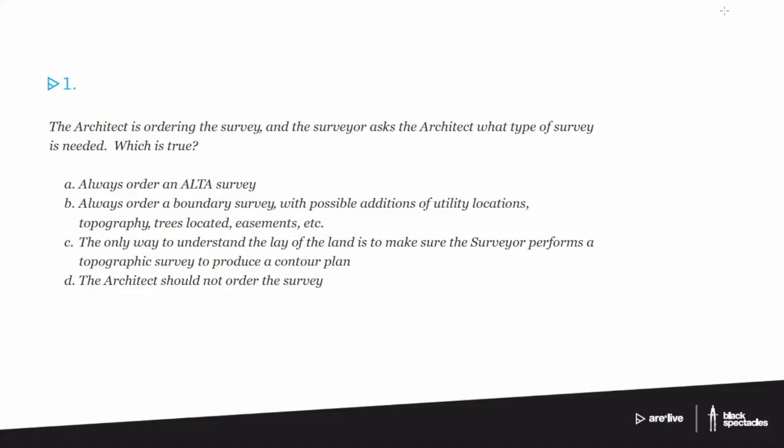A, always order an ALTA survey. B, always order a boundary survey with possible additions of utility locations, topography, trees located, easements, etc. C, the only way to understand the lay of the land is to make sure the surveyor performs a topographic survey to produce a contour plan. D, the architect should not order the survey.